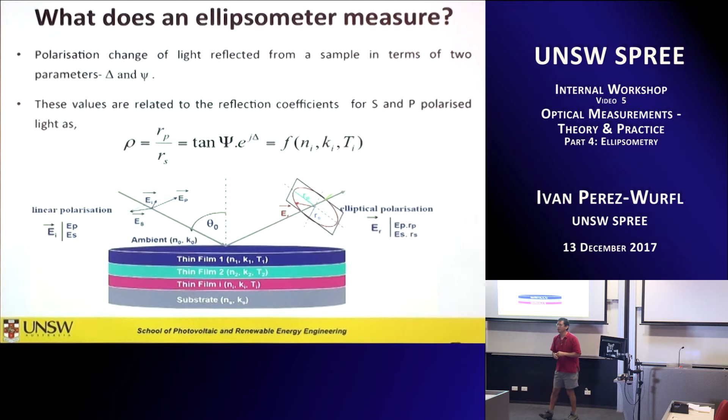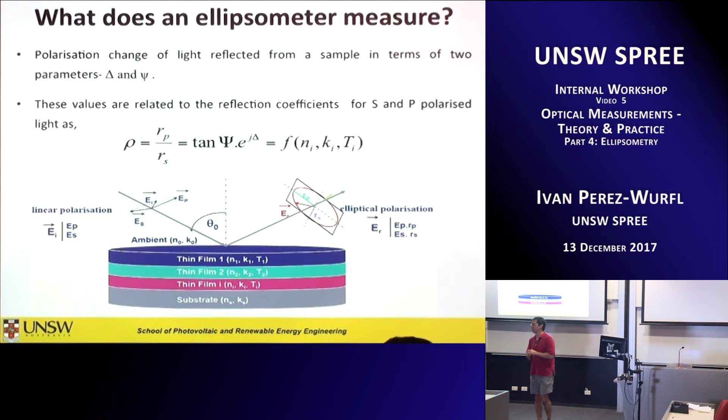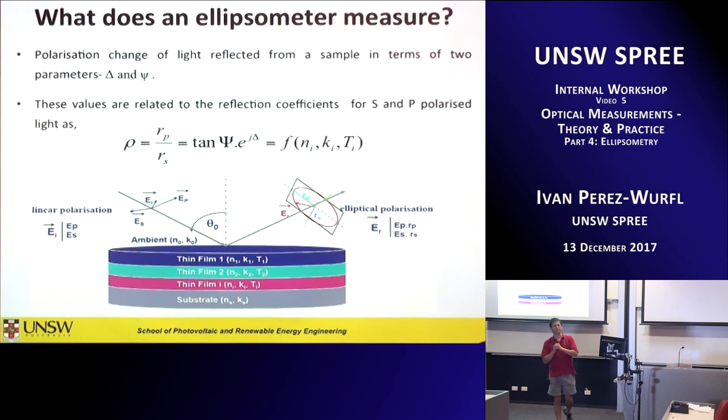You might think it's strange that we're measuring something indirect and then extracting n and k — but that's the same as R and T. We're just more familiar with R and T. To model R and T, we still need a model that proposes n and k. As far as I know, there is no optical technique that measures n and k directly. You always infer them from a different kind of measurement.